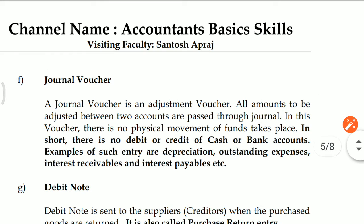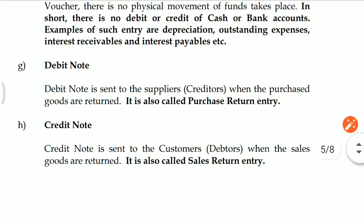Next voucher is Journal Voucher (General Voucher). In Journal Voucher, there are no debit or credit cash or bank accounts. For example, depreciation, outstanding expenses, interest receivable, and interest payable are booked in Journal Voucher. Debit Note Voucher is selected when you want to book a purchase return. Credit Note is selected when you want to book a sales return.